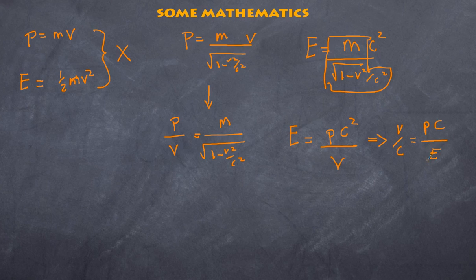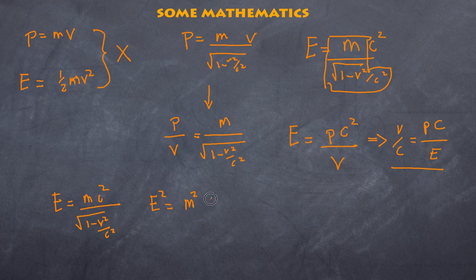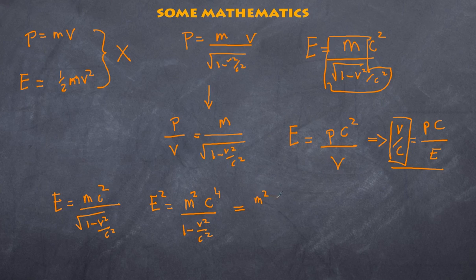Well remind ourselves e of course is equal to m c squared over the square root of 1 minus v squared over c squared. If I square both sides I get e squared is equal to m squared c to the fourth over 1 minus v squared over c squared. Now I have v over c and so now I have a relationship I can substitute that in.